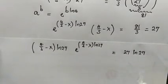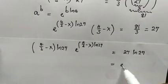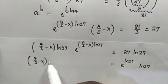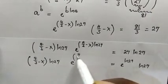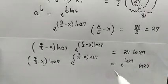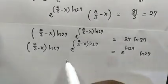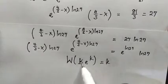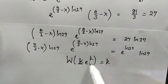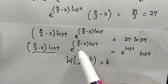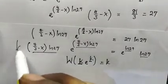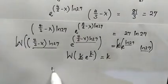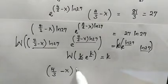Now we can make use of the Lambert W function. We rewrite 27 as e raised to the power of ln of 27, then multiply by ln of 27. From the left hand side we have 4 over 3 minus x times ln of 27, times e raised to the power of 4 over 3 minus x times ln of 27. Recalling that the Lambert W function of k times e raised to the power of k is equal to k, and since this expression equals this power of e, we take the Lambert W on both sides. The left hand side simplifies to 4 over 3 minus x times ln of 27.